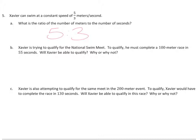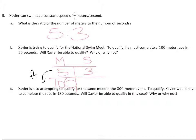When we have an equivalent ratio to find a rate, we can use a double number line or a ratio chart. In part B, Xavier is trying to qualify — he must hit 100 meters in 55 seconds. We know he can hit 5 meters in 3 seconds. So we start our chart labeled meters and seconds, with 5 meters in 3 seconds. To get to 100 meters, we multiply 5 by 20 to make 100, and we multiply 3 by 20 on the seconds side. So 3 times 20 is 60.